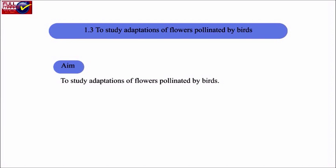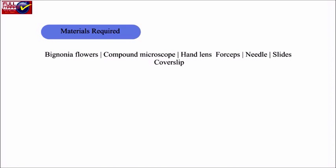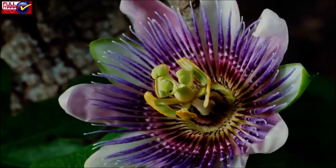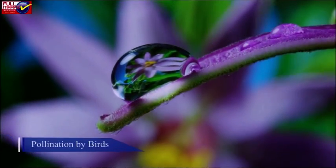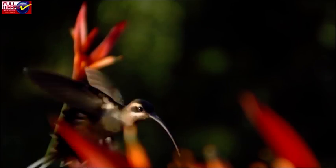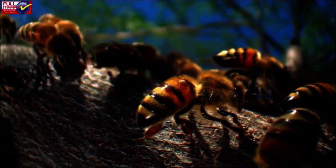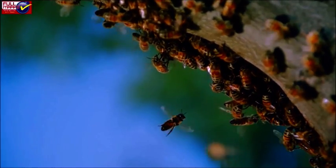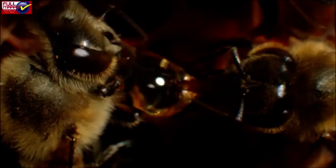Section 1.3: To study adaptations of flowers pollinated by birds. Aim: To study adaptations of flowers pollinated by birds. Materials required: Bignonia flowers, compound microscope, hand lens, forceps, needle, slides and cover slip. Birds are very important pollinators of wildflowers throughout the world. In the continental United States, hummingbirds are key in wildflower pollination. In other areas, honeycreepers in Hawaii and honey eaters in Australia are important pollinators. In our country, silk cotton, Erythrina and a few other trees are visited by crows and miners when in flower.